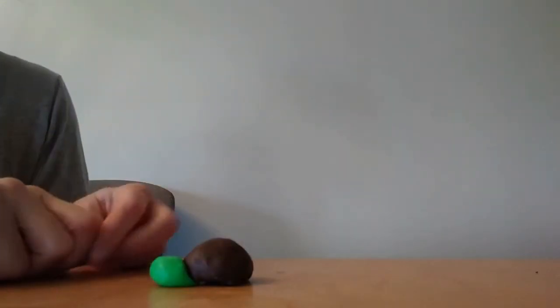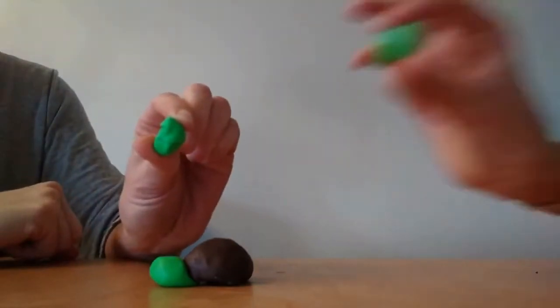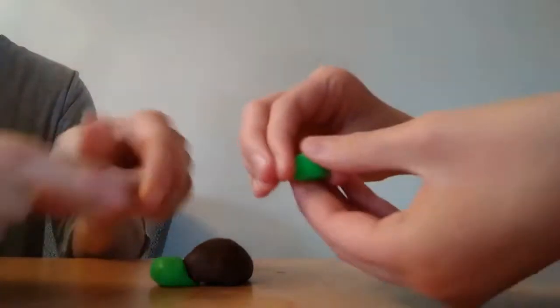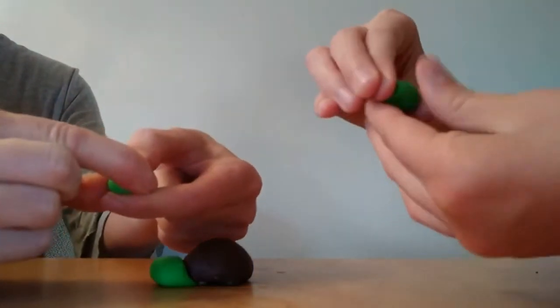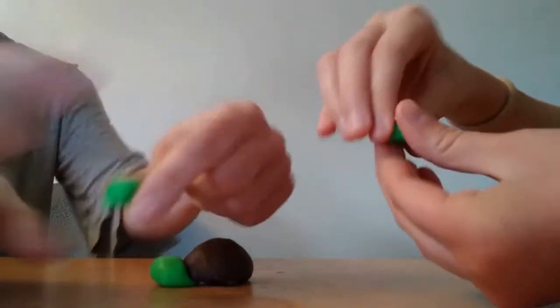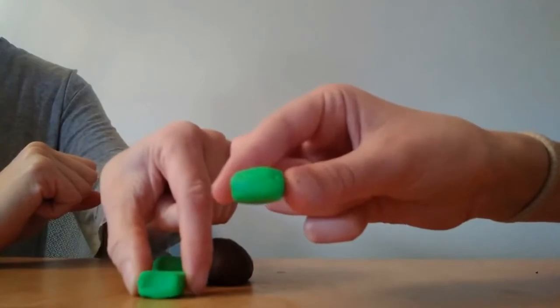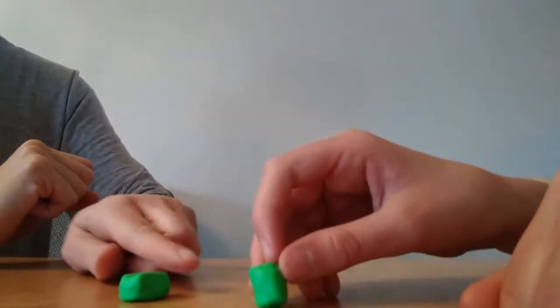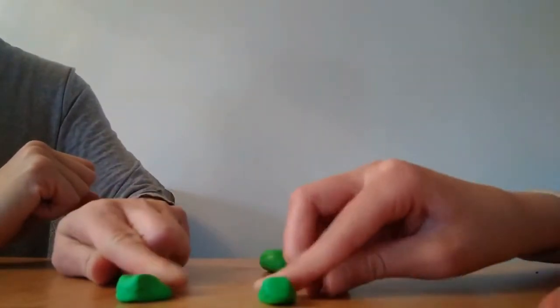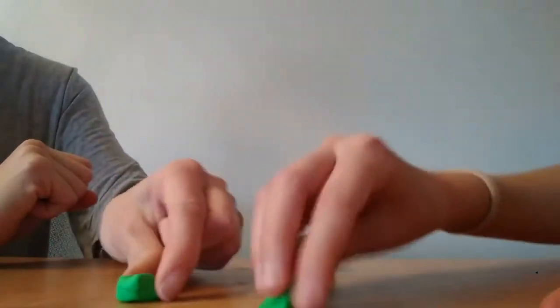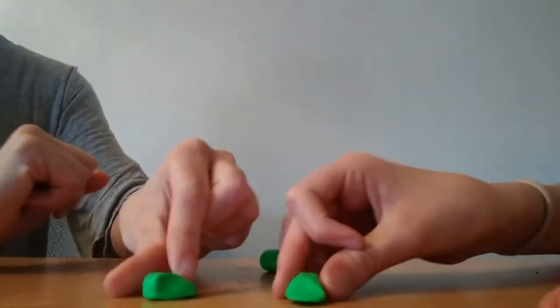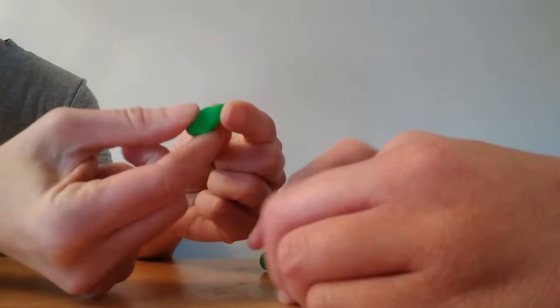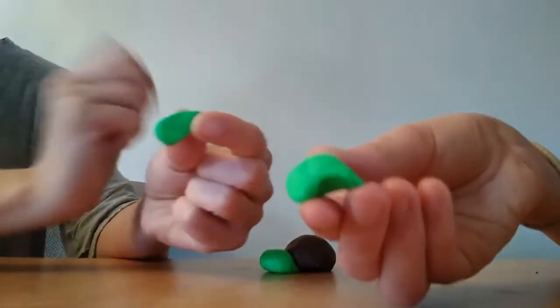Okay, so next we're going to make the front legs. You take a little piece of clay. We chose green again. And you're going to make it into a rectangular shape. Kind of squish it down. And then you're going to flatten the back, just like the head. And then that top part, you're just going to pinch it so it almost looks like a triangle.